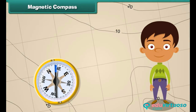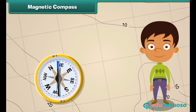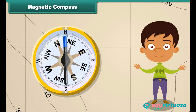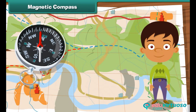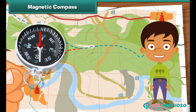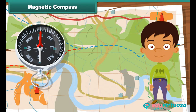A magnetic compass is a simple device which helps us to locate a place. It has a long needle. One end of the needle is marked N to represent the north direction. No matter where you are on Earth's surface, the needle of the magnetic compass will always point to the north direction. Thus one can find all other directions in relation to north.